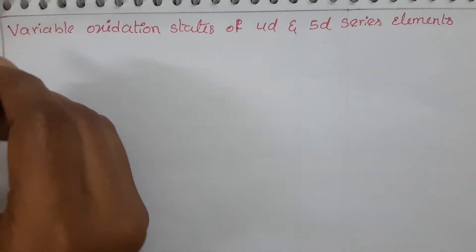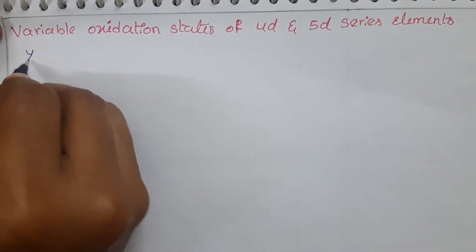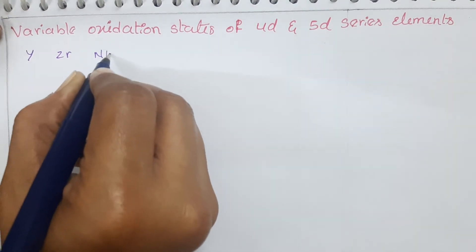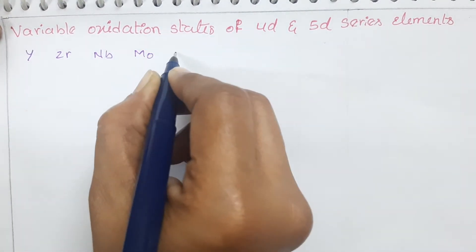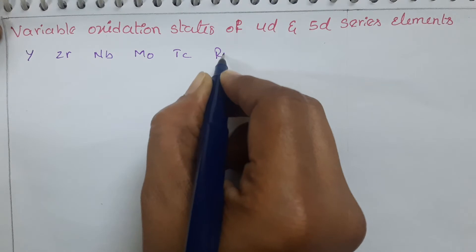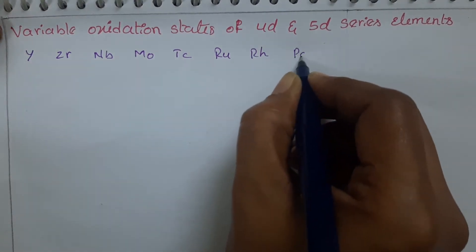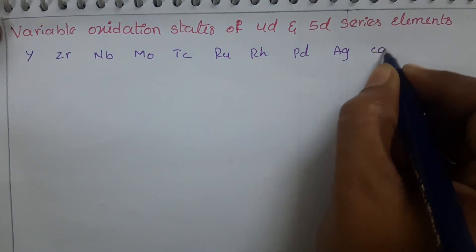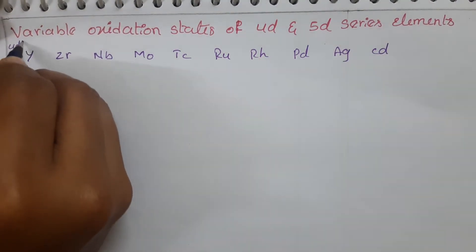Now let us see the elements of the 4d series. The elements are yttrium, zirconium, niobium, molybdenum, technetium, ruthenium, rhodium, palladium, silver, and cadmium. So these are the 4d series elements.